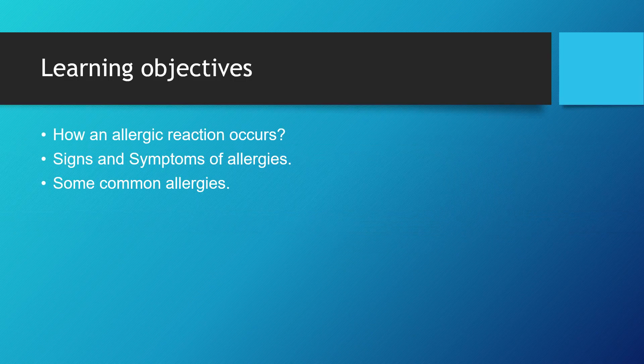What are the learning objectives of today's lesson? At the end of this lesson we will know what an allergic reaction is and how it occurs, what are the signs and symptoms of allergies, and regarding some important allergies we will discuss the common symptoms and how they can be prevented. So some common allergies we will be discussing today.